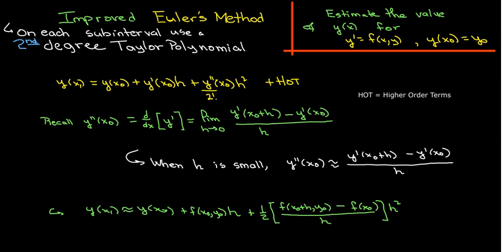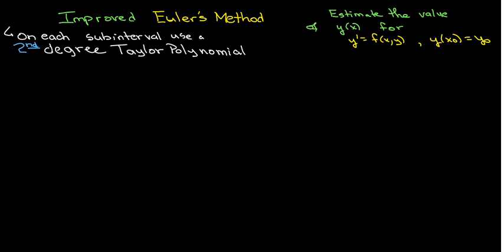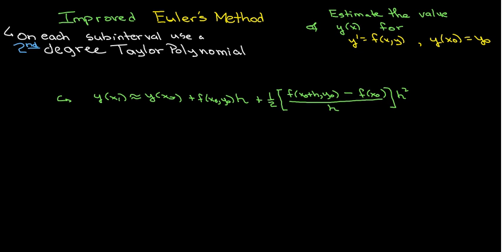So if I put that together, my y prime at x naught is going to be f at x naught comma y naught. And then I can go ahead and replace my y prime with f evaluated at x naught plus h comma y naught. And then I should have had here f of x naught comma y naught. So let's go ahead and put in a comma y naught there. All right, so I'll do the same thing here.